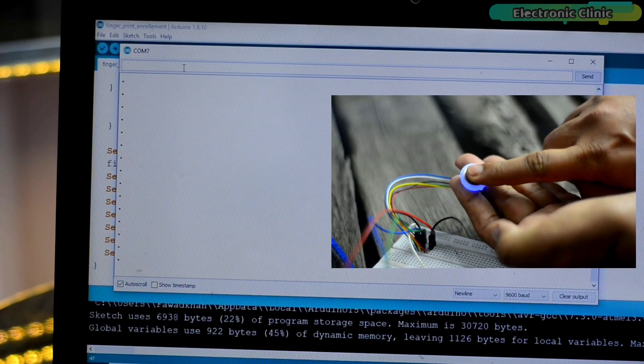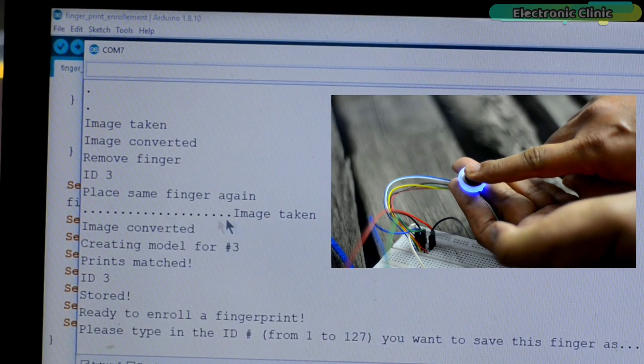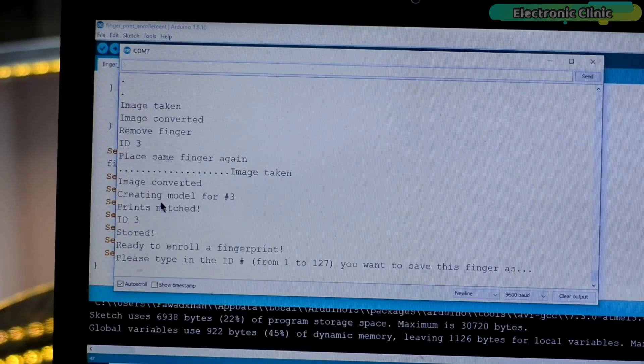Now I can place my finger. I'm going to place the same finger again. Now my finger is enrolled and its ID is 3.